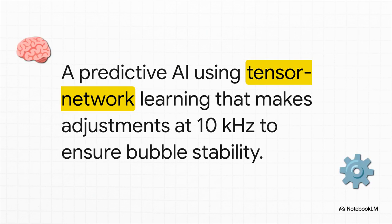And finally, holding it all together, you have the bubble control algorithm, the BCA. This is the brain, the hyper-fast AI pilot. Because here's the thing, this warp bubble is fundamentally incredibly unstable. We're talking it wants to fall apart at any moment. So this AI has to make 10,000 calculations and adjustments every single second to keep it stable. It's using this advanced tensor network learning to predict any little wobble and fix it before the whole thing goes, well, boom.